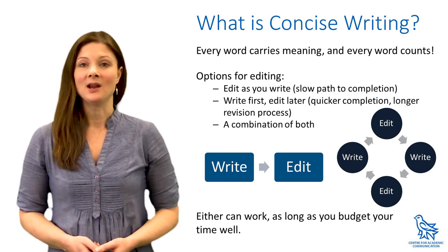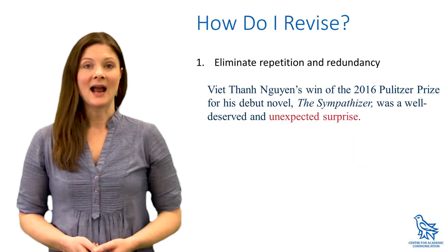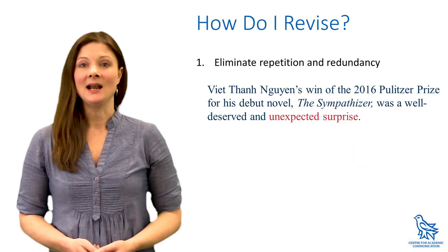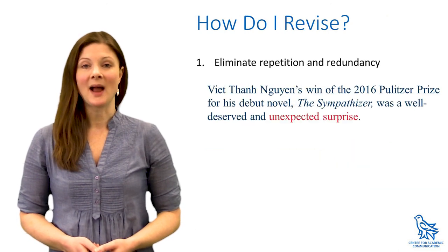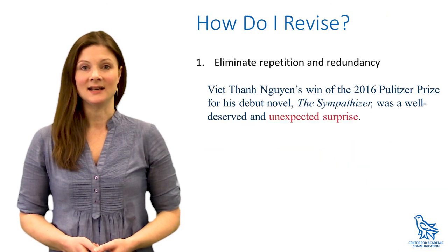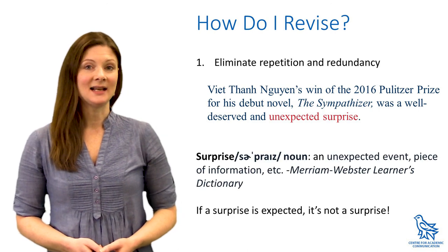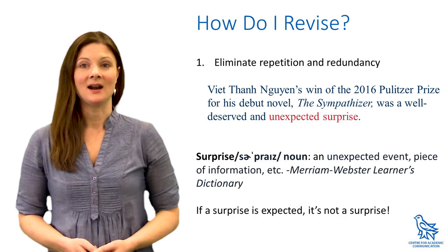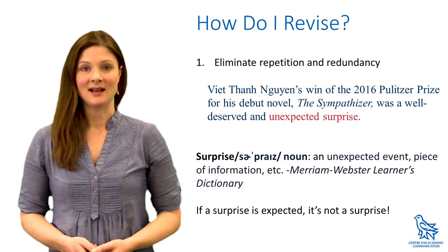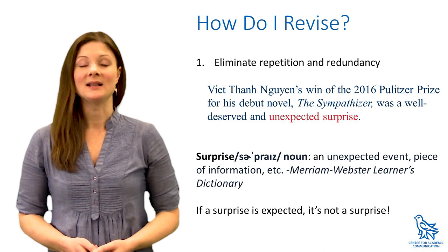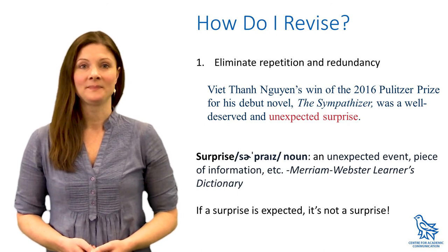So, how can you make your writing more clear? First, edit to eliminate any words, phrases, or information that is repetitive or redundant. For example, a surprise is by definition unexpected. There's no such thing as an expected surprise, so to say that one is unexpected is unnecessary.